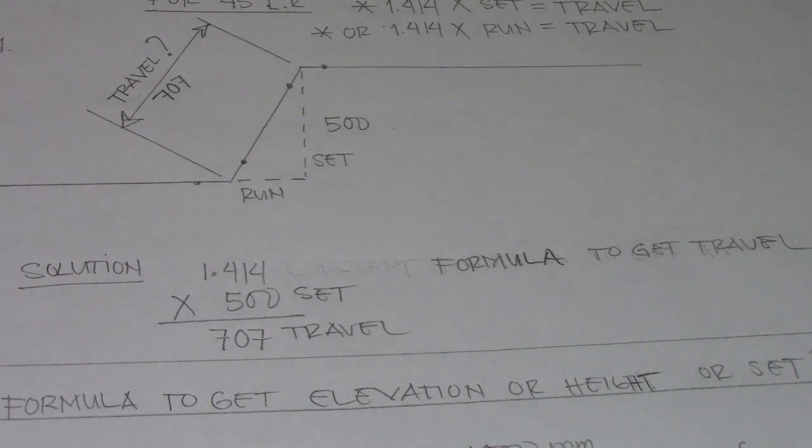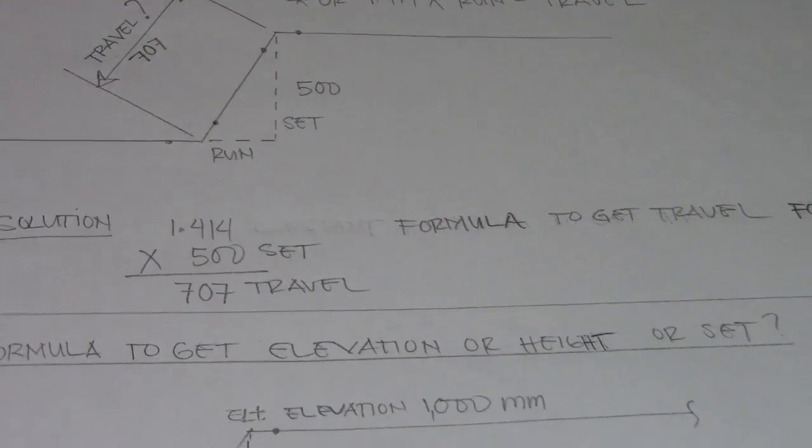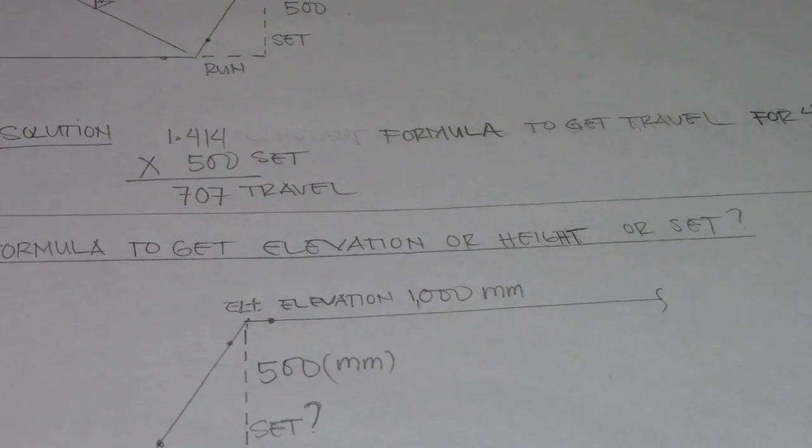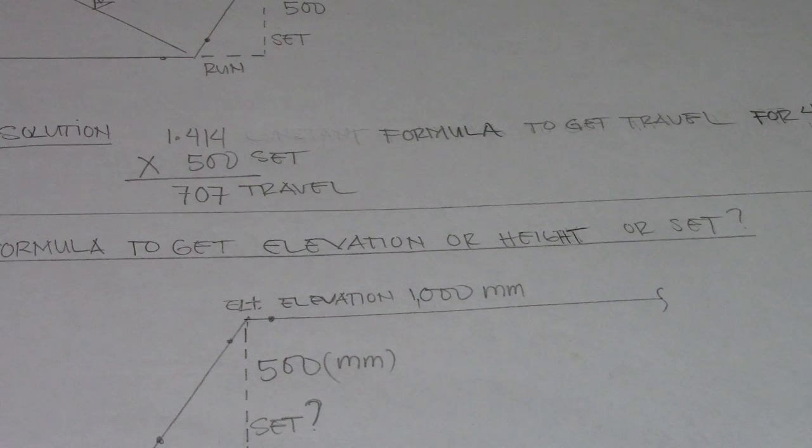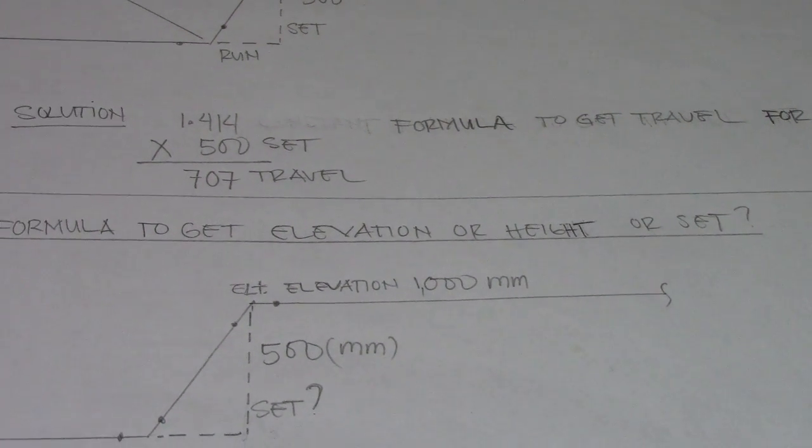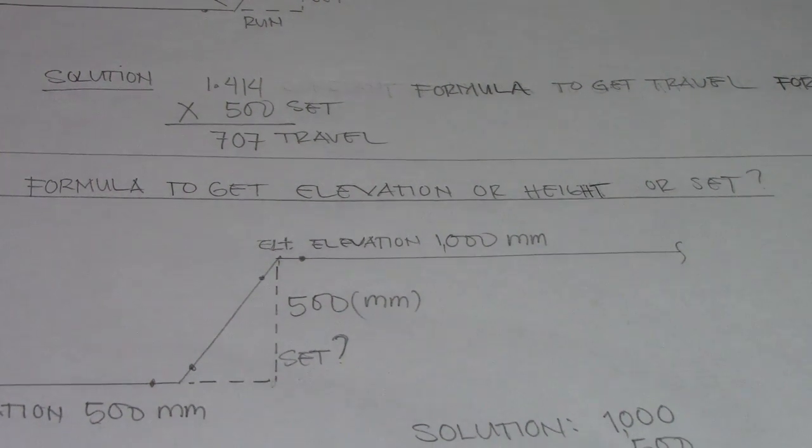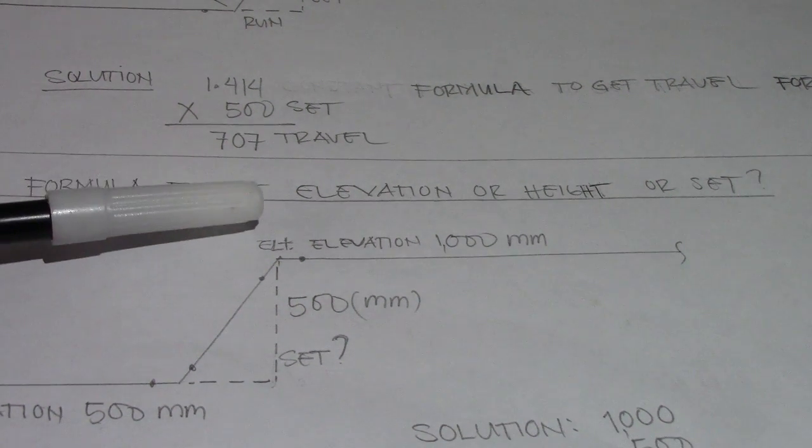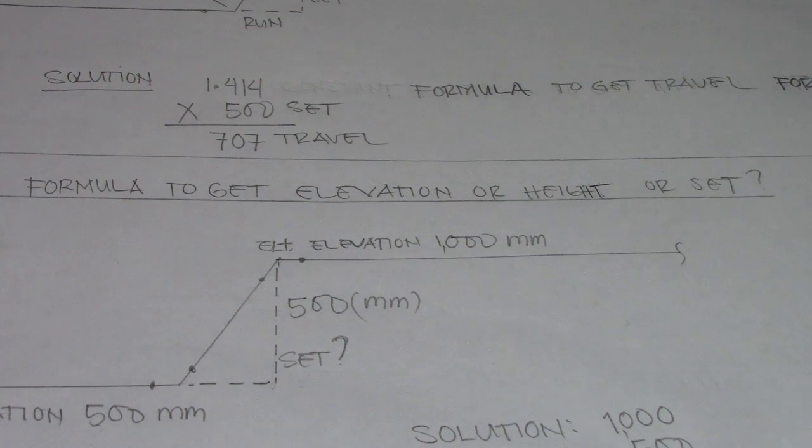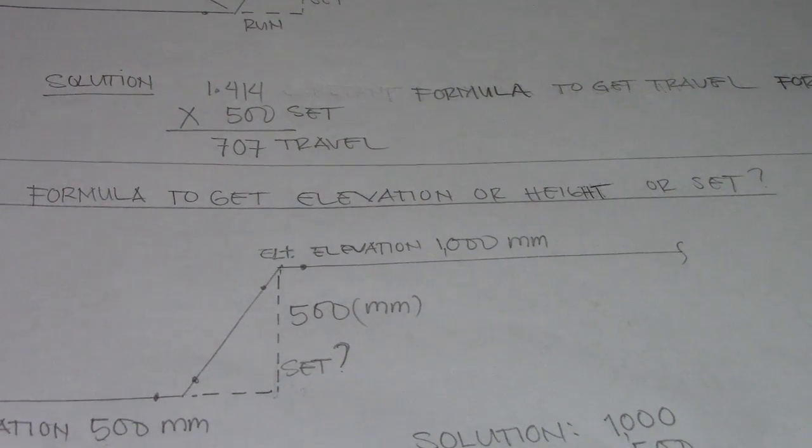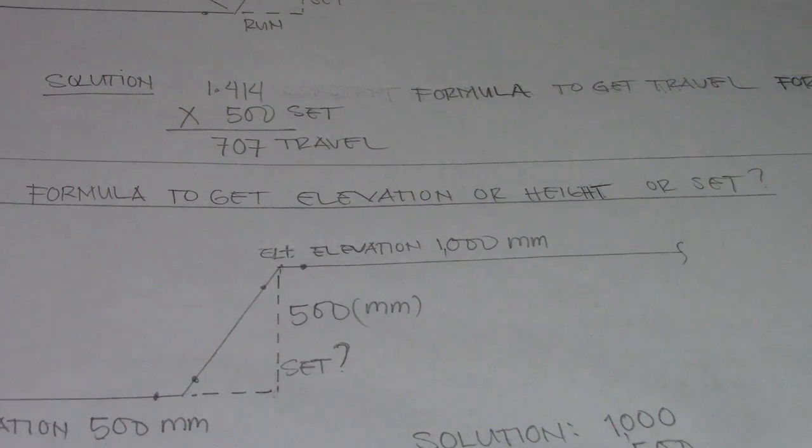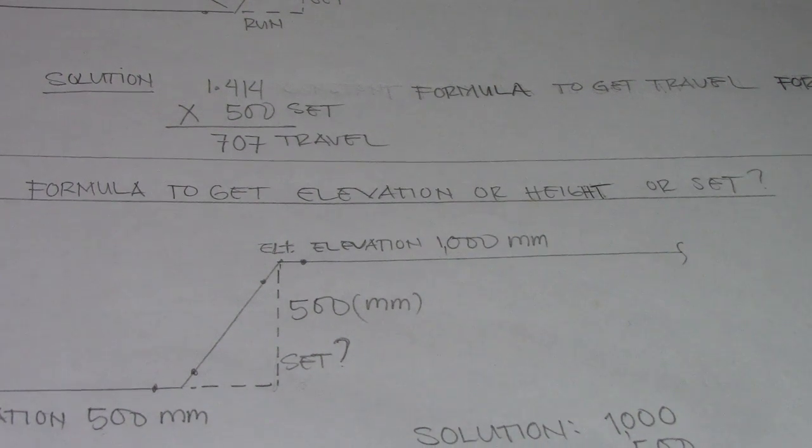We also have a formula to get elevation or height. For example, we have elevation here of 1000 and elevation here of 500. Just subtract them, and the solution is here: 1000 minus 500, and the answer is set.